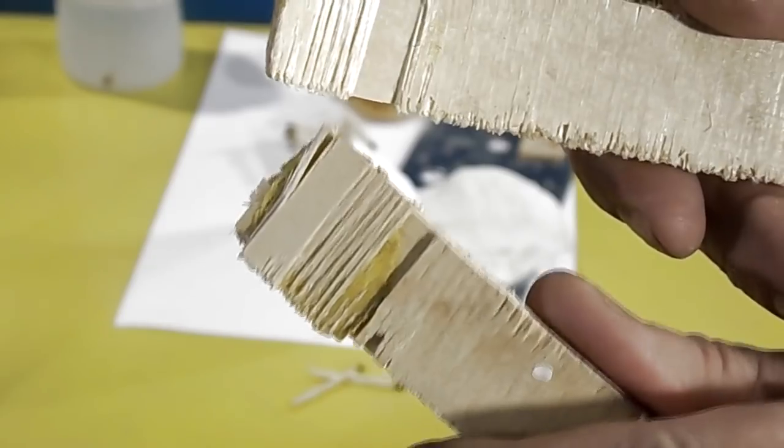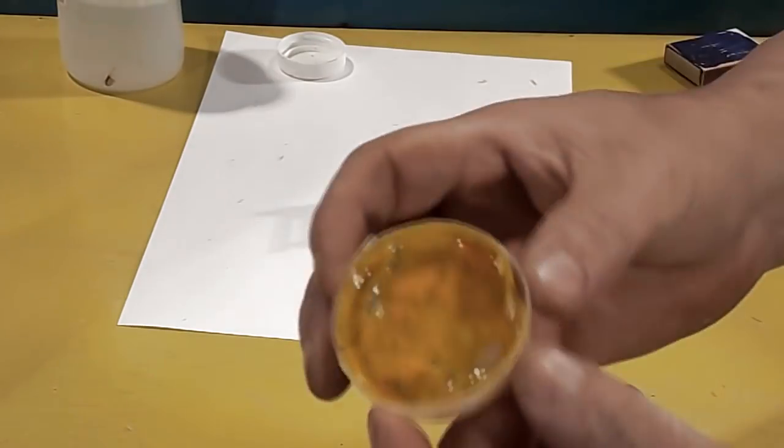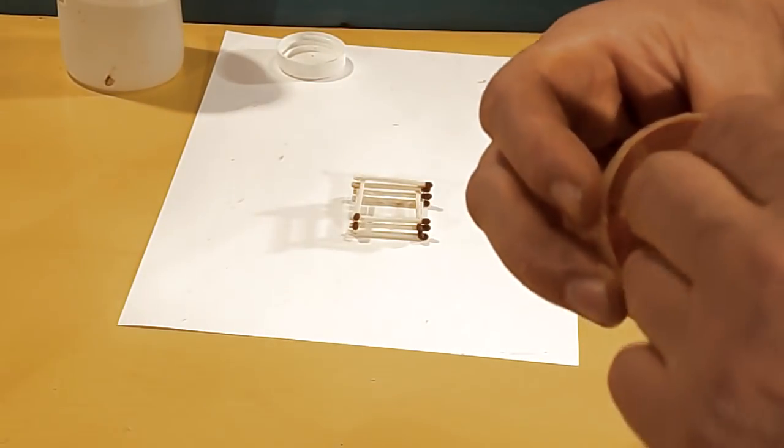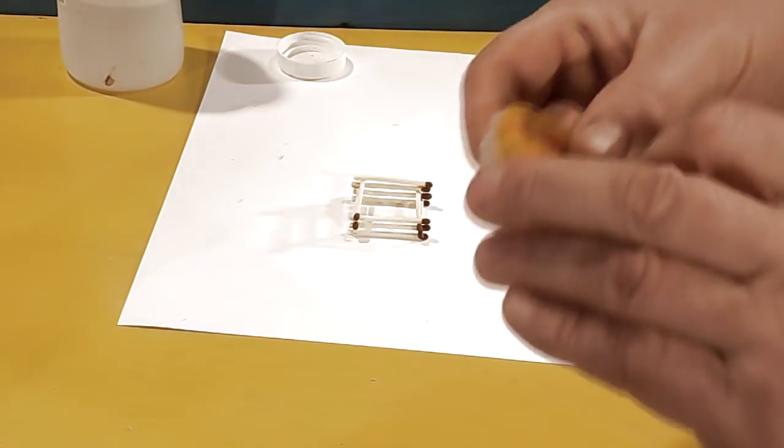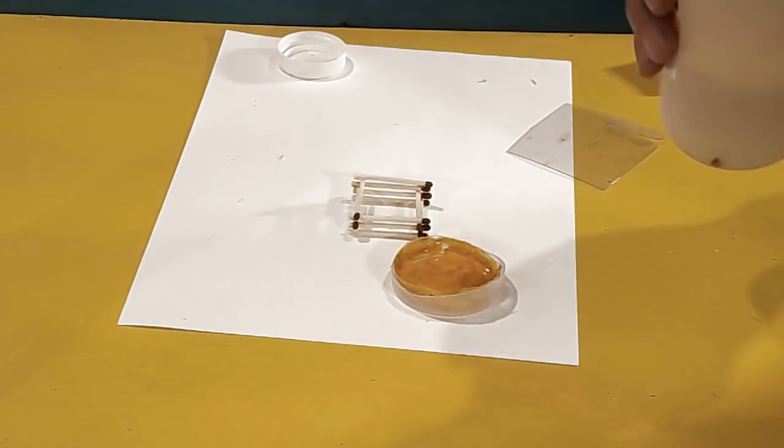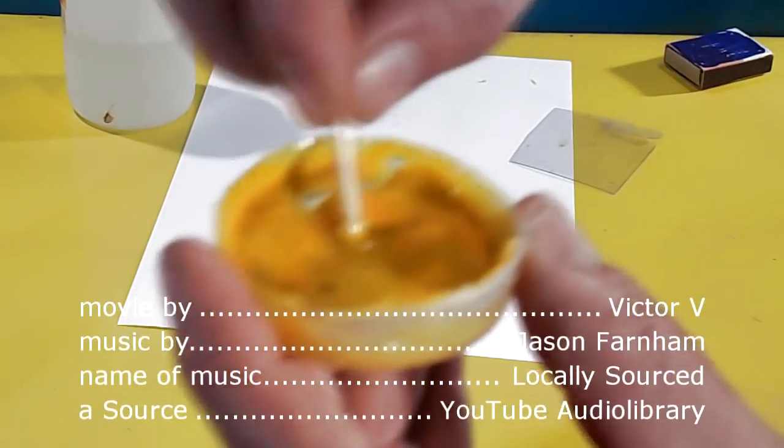If the glue is dried, then it can be restored by adding a little acetone. So in terms of its properties, this adhesive is suitable for gluing various models of plastic and wood.